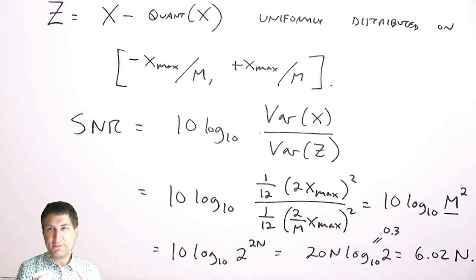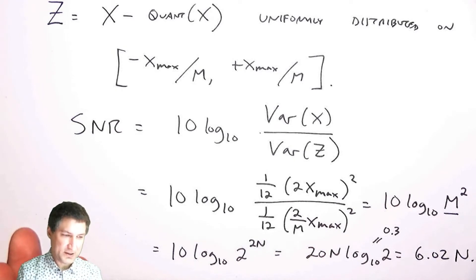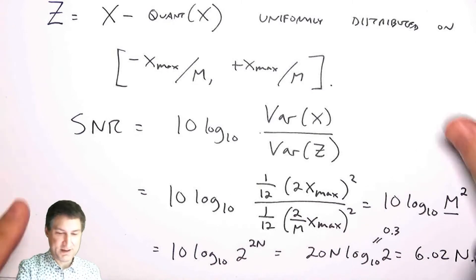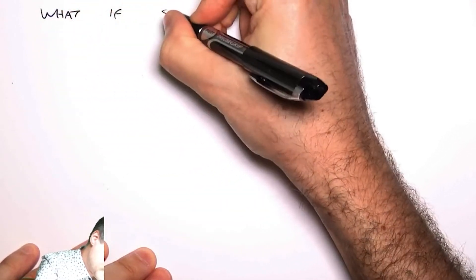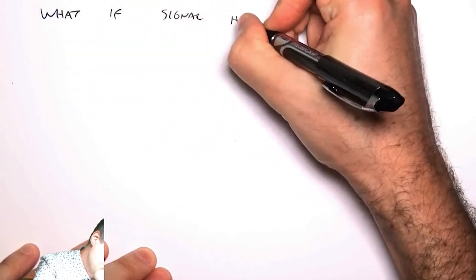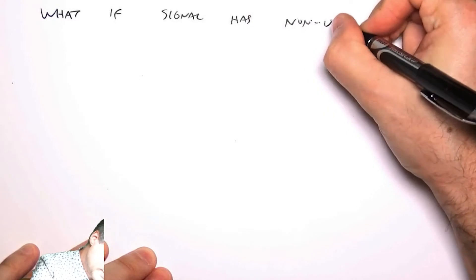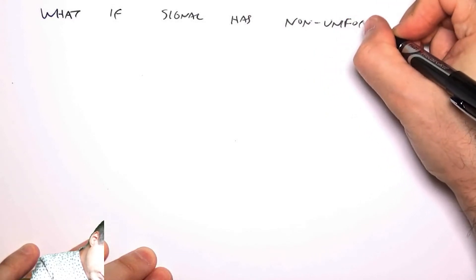This makes sense when I have a uniform PDF for my input signal, but maybe I don't have a uniform PDF. Maybe I have some sort of a weird PDF. So what if the signal has a non-uniform PDF? What do I do?